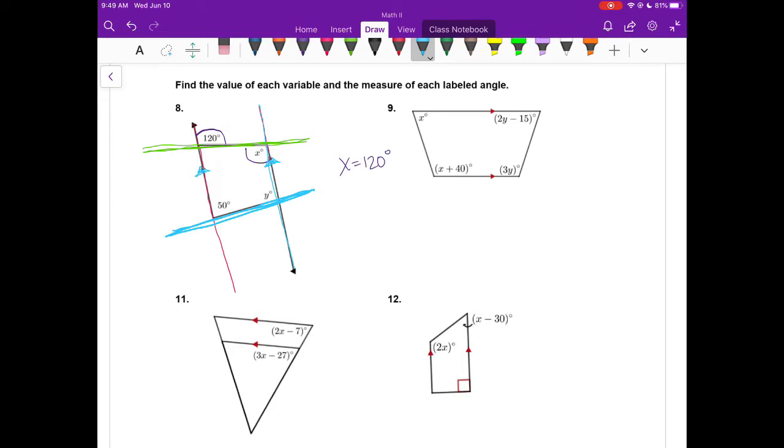Since 50 and Y are the same side interior, this is the transversal of two different parallel lines, 50 plus Y has to equal 180. So Y would equal 130 degrees because of the same side interior angles theorem.